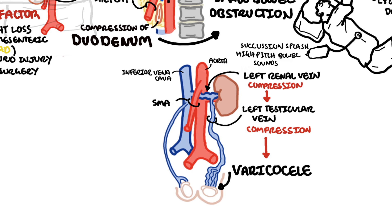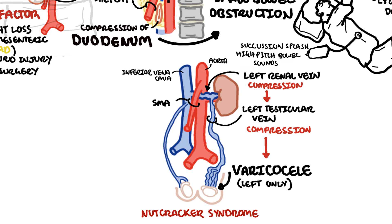When the superior mesenteric artery compresses the left renal vein causing a varicocele, this condition is termed nutcracker syndrome. The varicocele is typically on the left side because the right testicular vein drains straight into the inferior vena cava.